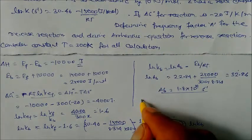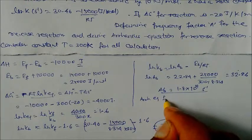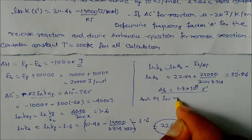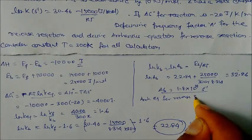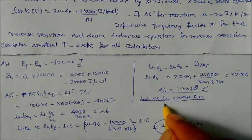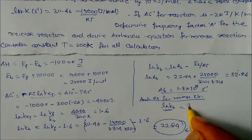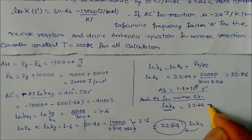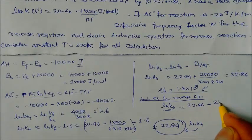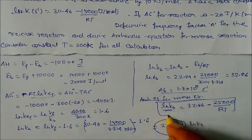The Arrhenius equation for the reverse reaction is: ln(kb) = 32.86 minus 25000/(R×T). That is our final answer for this problem.